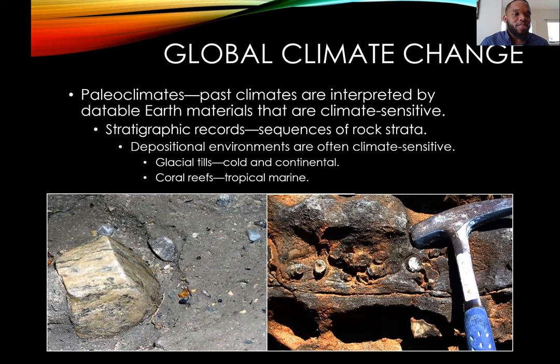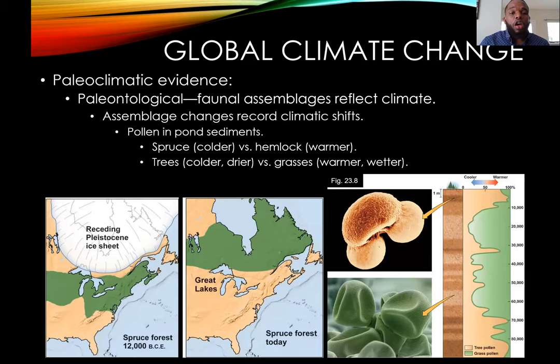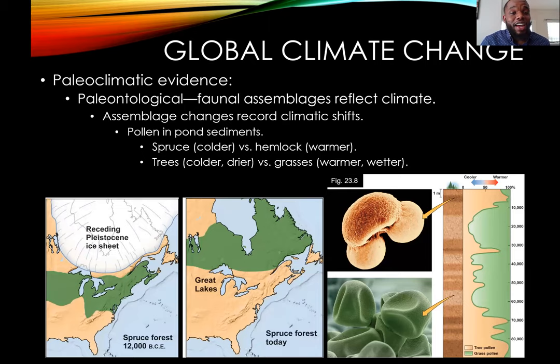If we come across a landscape with a bunch of glacial till — rocks haphazardly put together — we know it was a cold continental environment. One of the biggest things we use is pollen, spores, and megaspores. These are abundant, and we can look at them under a microscope to understand what was going on. For instance, spruce spores represent colder climates, hemlock represents warmer climates; trees represent a colder drier climate, while grasses represent a warmer and wetter climate.